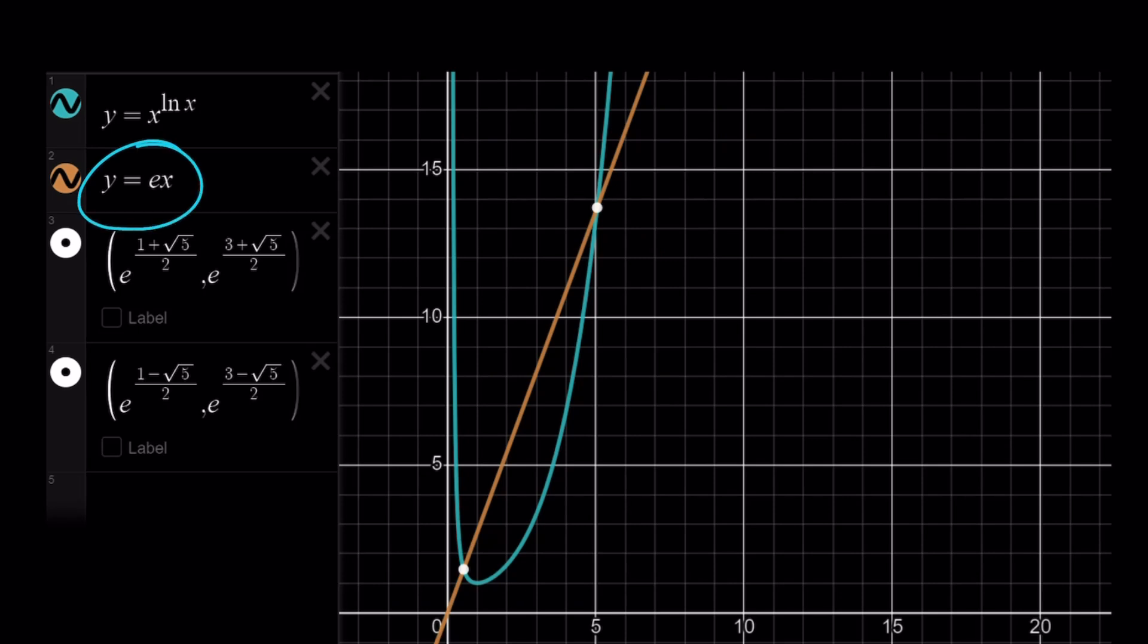And y equals ex is basically a straight line that goes through the origin. And these two graphs, no doubt about it, right? They're going to intersect at two points. And these are going to be the intersection points, which are the solutions for the original equation. And this brings us to the end of this video.